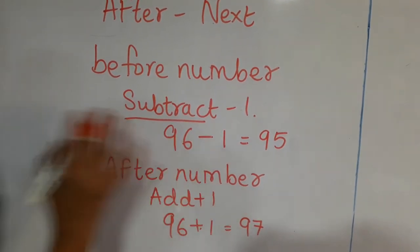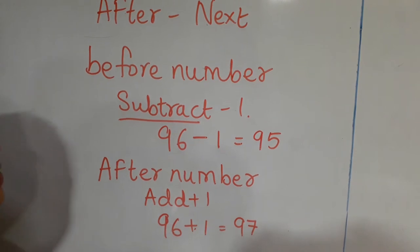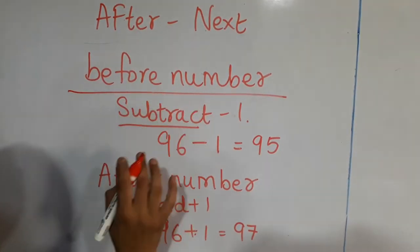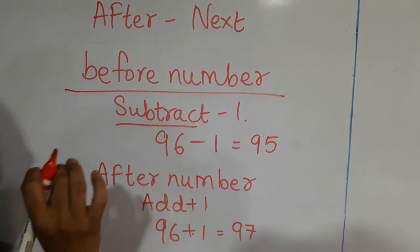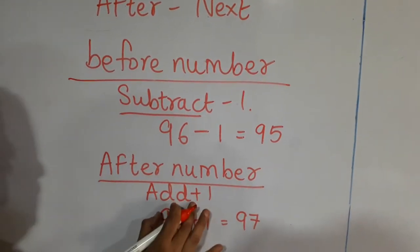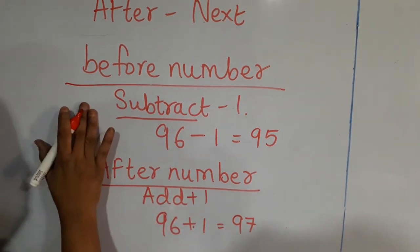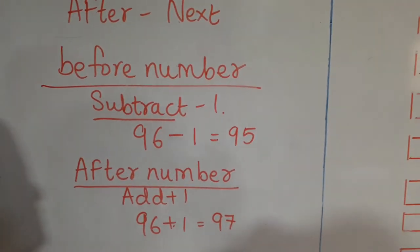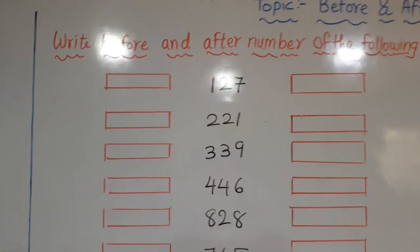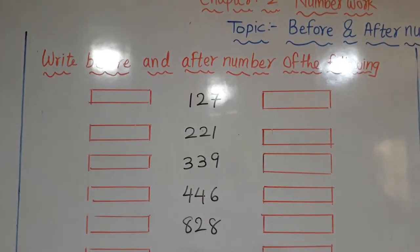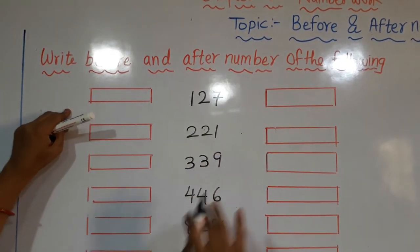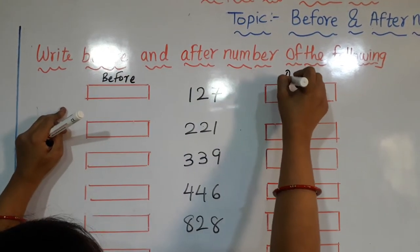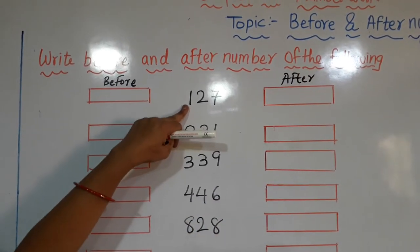This is the simplest way. If you know the numbers, you can write directly. But if you don't know the number, calculate like this: for the before number, subtract 1; for the after number, add 1. Now we will see some examples. You can see I have written some examples. Like 127 — this is the before number and this is the after number.